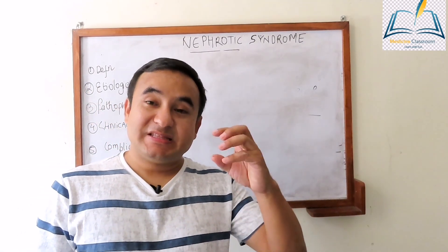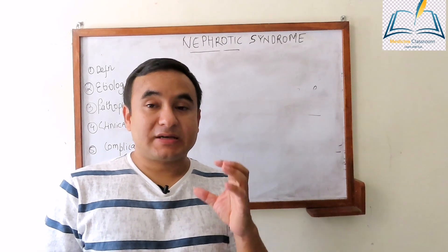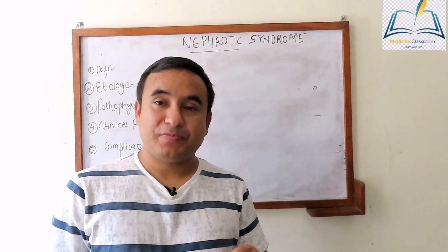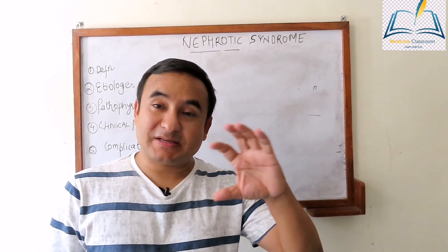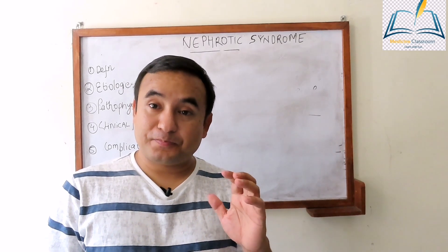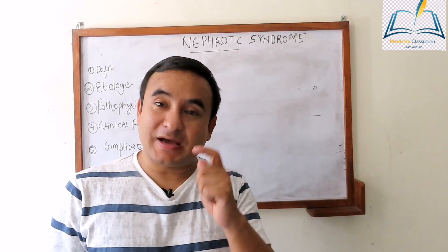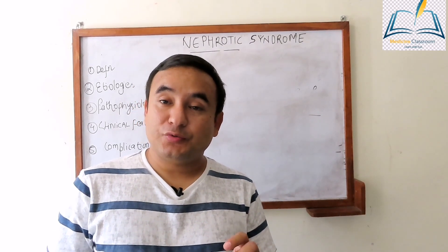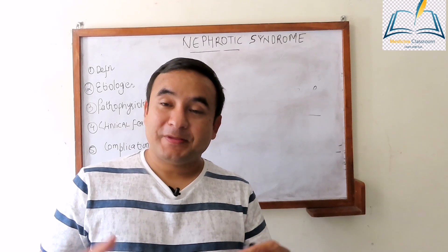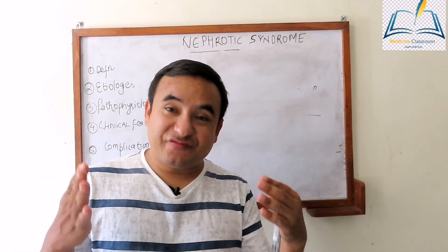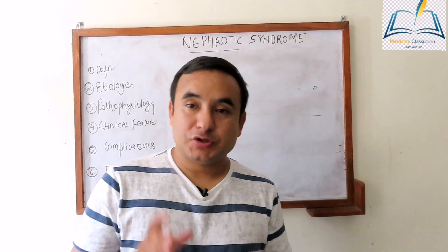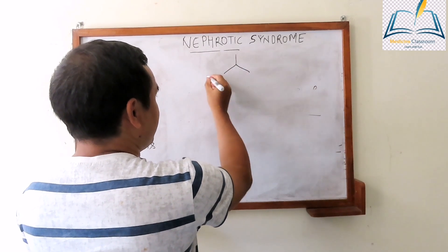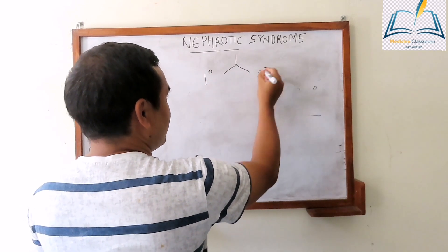In the primary cause, there is a primary problem in the glomerulus. Secondary nephrotic syndrome is a systemic disease that also has an effect upon the glomerulus. Etiologically, we can divide nephrotic syndrome into primary nephrotic syndrome and secondary nephrotic syndrome.